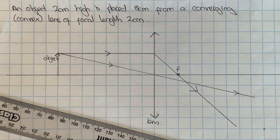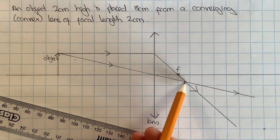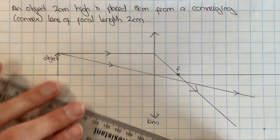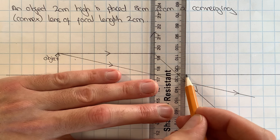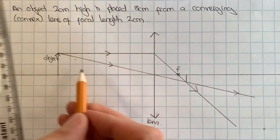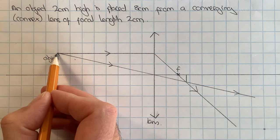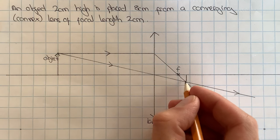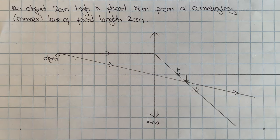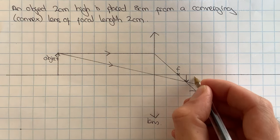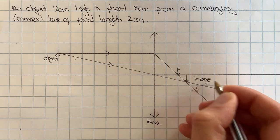And now I can find where my image is formed, which is where the real rays cross here. I can draw a vertical line down from the principal axis to where they cross, and because the two rays started from the arrowhead of the object, they will finish at the arrowhead of the image, and I can label that up as the image.